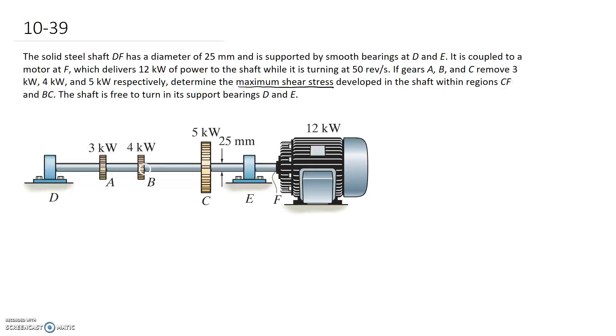We're told that the shaft is free to turn in its support bearings D and E, and we could have inferred that from the beginning where it told us these were smooth bearings. That's trying to tell us there's no resistance, so no torque lost through these components.